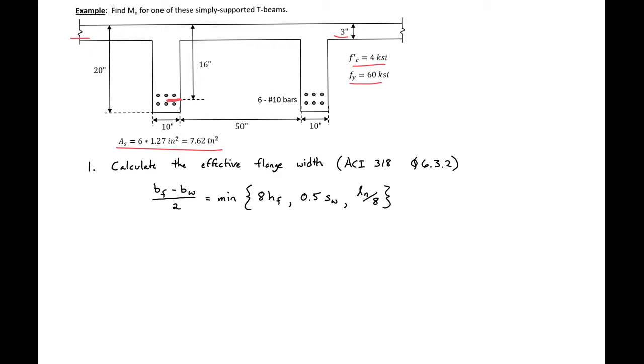So the first step will be to calculate the effective flange width and we're going to use our ACI 318 design requirements. We're given this expression in ACI that our BF minus our BW over two is equal to the minimum of these three. I forgot to give us that our span length is going to be equal to 14 feet and that's in and out of the page.